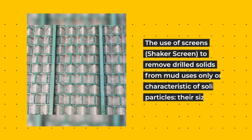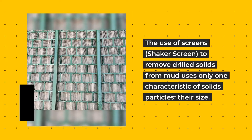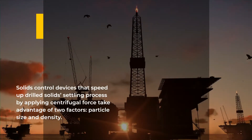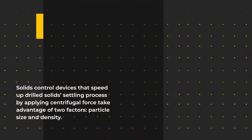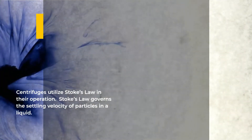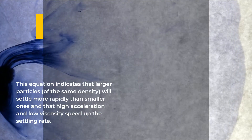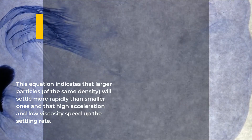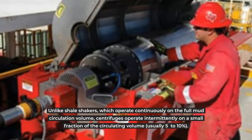Oilfield centrifuge mechanisms and types. Shaker screens remove drilled solids from mud using only one characteristic of solids particles: their size. Solids control devices that speed up drilled solid settling by applying centrifugal force take advantage of two factors — particle size and density. Centrifuges utilize Stokes law in their operation, which governs the settling velocity of particles in a liquid. This equation indicates that larger particles of the same density will settle more rapidly than smaller ones, and that high acceleration and low viscosity speed up the settling rate.